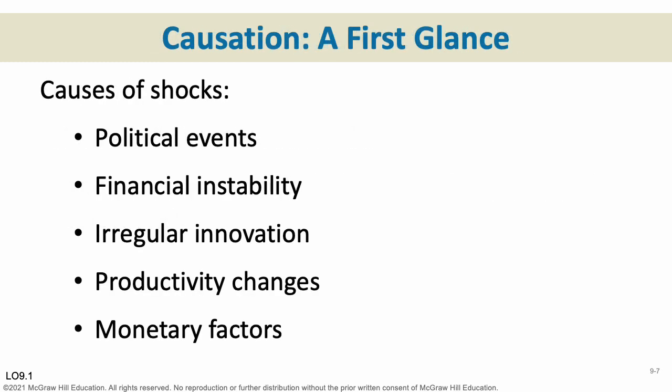What can cause these shocks? Causes can be anything from political events — upheaval in a country, for instance. Financial instability — that's what happened in 2008, when the whole banking system almost collapsed. Irregular innovation: technology comes in waves, and when technologies aren't being invented regularly, you'll get periods of much less growth. Productivity changes — anything that would cause rapid changes in productivity can cause a shock. And finally, monetary factors as well. If there's too much money, if there's inflation — which has been happening right now — that can hurt the economy.